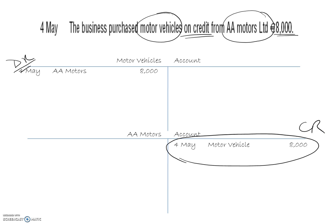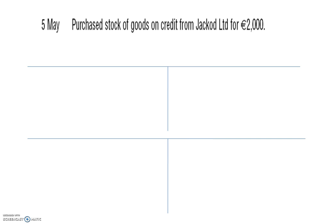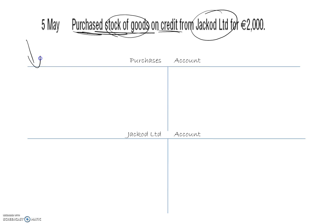5th of May: purchased stock of goods on credit from JackoD Limited for 2,000. Purchasing stock of goods implies goods for resale, recorded in a purchases account. It's on credit so no money changes hands — we need a JackoD account to show we still owe that money. We debit the purchases account: 5th of May, JackoD Limited, 2,000. And we credit JackoD's account, since JackoD is a creditor — this business owes JackoD the money.